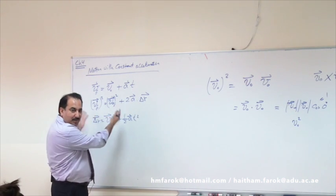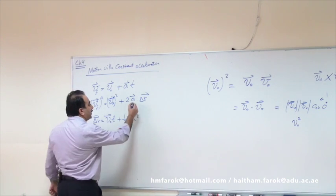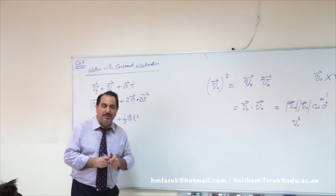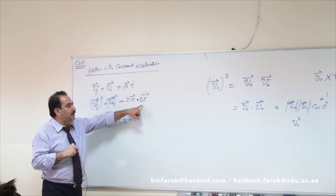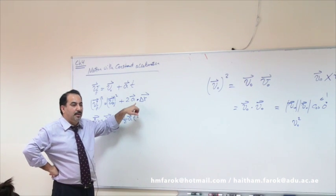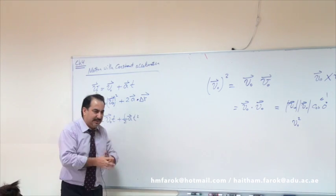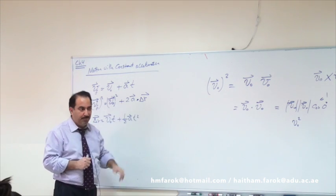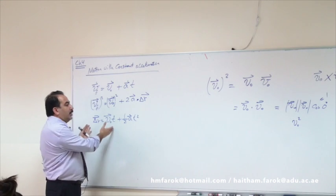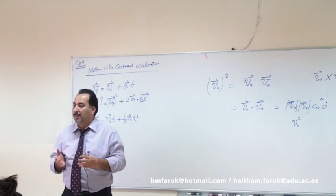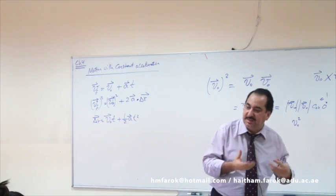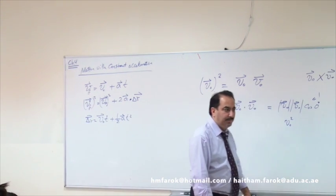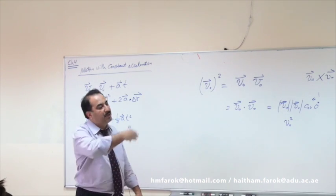Looking at the other side of the equation — acceleration is a vector and displacement has a multiplication. We need to know if it's dot or cross. The right-hand side is scalar, so this side must be scalar too. If you put a cross product you'd have vector plus scalar, which is wrong. So this must be a dot product. This proves that in an equation, both sides must be equal — vector equals vector, scalar equals scalar.